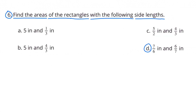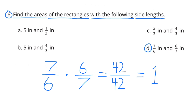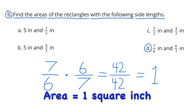D: 7/6 inches and 6/7 inches. 7/6 times 6/7 equals 42/42, which is the same as 1. The area is 1 square inch.